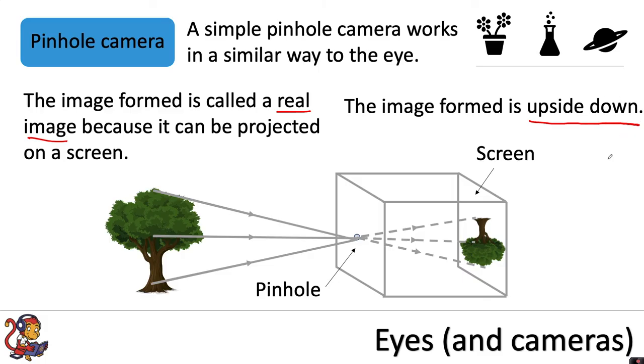Luckily our eye sends the information to the brain and that sorts that bit out for us. But if you were to make a simple pinhole camera your image would be upside down. So there's lots of similarities to the eye. This pinhole here is very much like the pupil of the eye because it's just a small hole that lets the light through and the image that's formed is upside down.